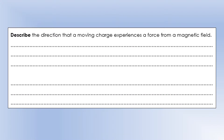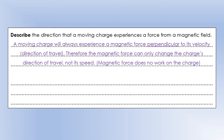We've seen the effect magnetic fields have on current-carrying conductors, but let's think more generally about how magnetic fields affect moving charged particles. A moving charge will always experience a magnetic force perpendicular to its velocity — perpendicular to its direction of travel. This means the magnetic force can only change the charge's direction of travel; it has no effect on the charge's speed.